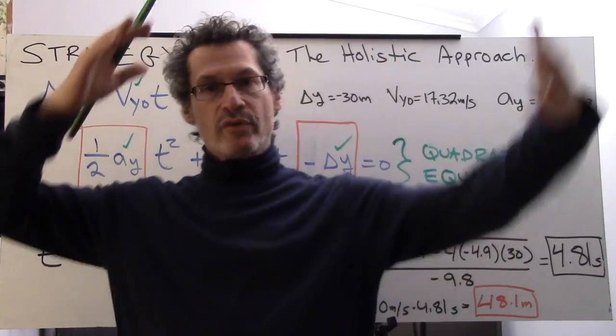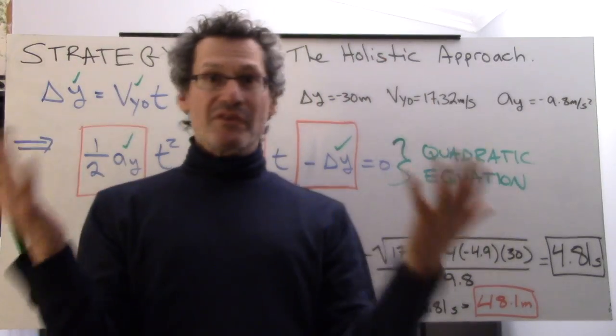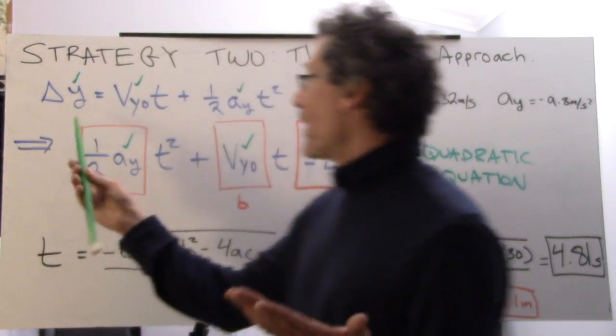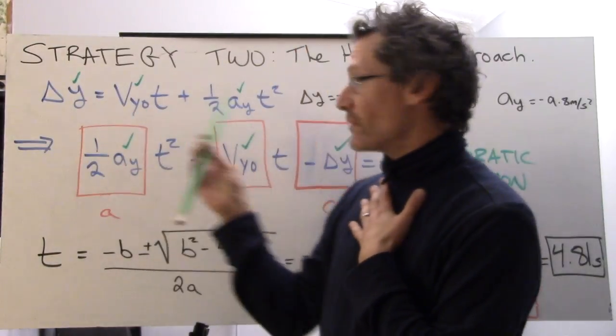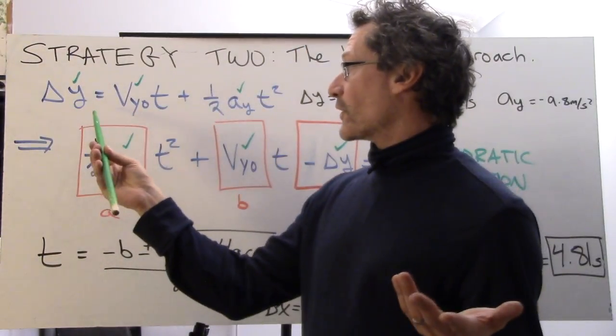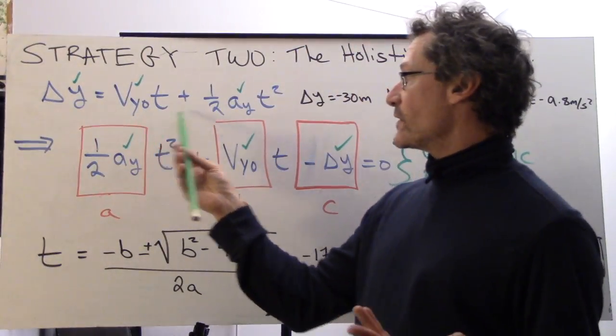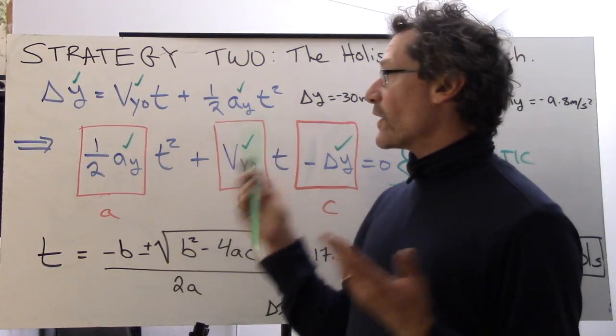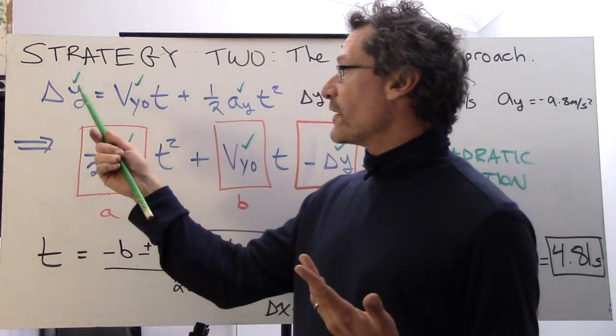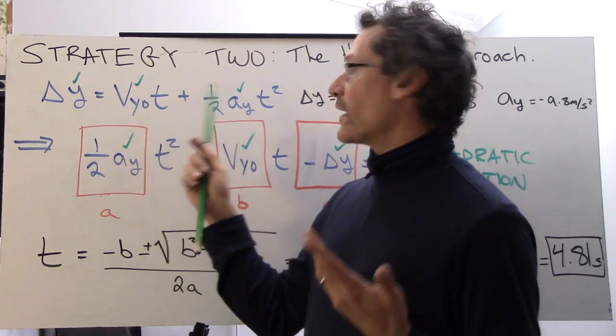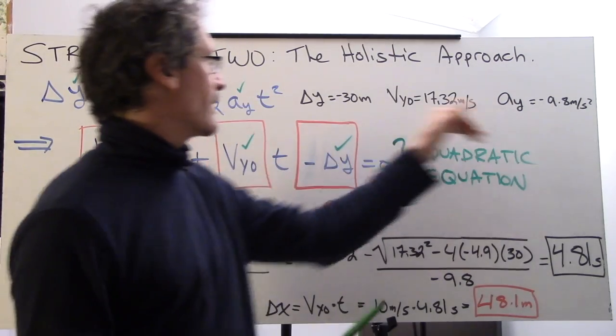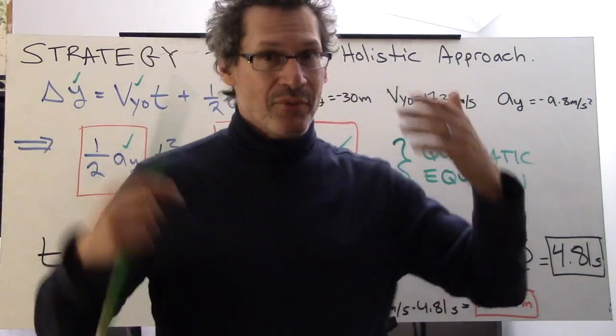Here it is: strategy two, the holistic approach. We can do this in one step totally. What I have here is equation number two: delta y equals v y naught t plus one half a y t squared. From the very beginning, we have delta y, we've got v y naught, we've got a y. All these values are presented and we can solve this in one step.